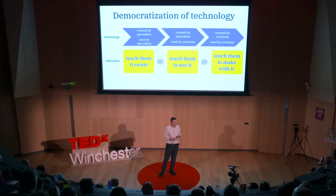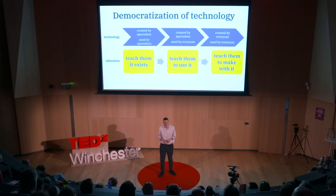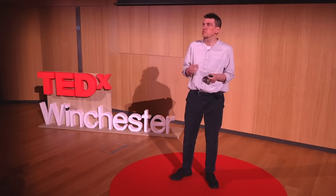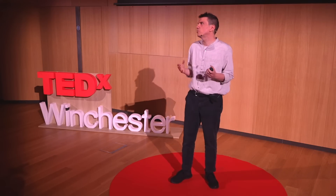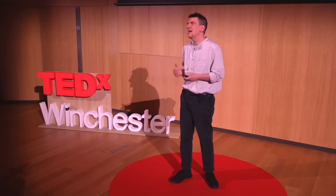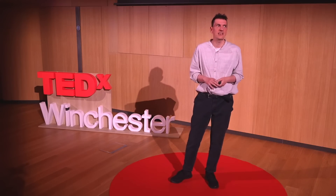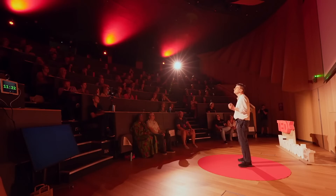Schools started teaching children how to make a computer do something new by describing what they wanted in code — not just how to use a computer, but how to make a computer do new things. What education teaches children about any technology has always evolved in response to how far the technology is in this democratization. But as a technology evolves, how do we decide what we need to teach to all children versus what we can just teach to the older students who choose to specialize? Well, the key factor is how ubiquitous that technology will be across how many industries.